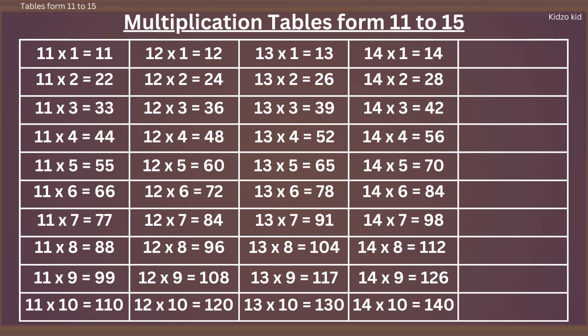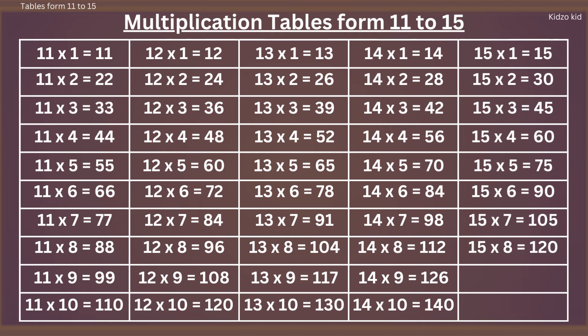15 ones are 15, 15 twos are 30, 15 threes are 45, 15 fours are 60, 15 fives are 75, 15 six are 90, 15 sevens are 105, 15 eights are 120, 15 nines are 135, 15 tens are 150.